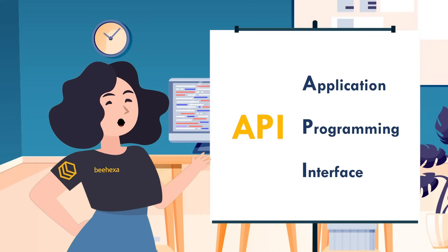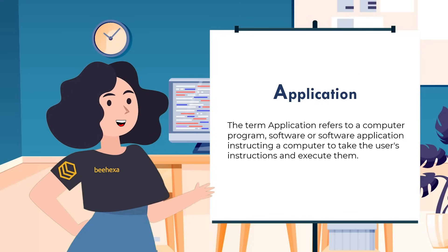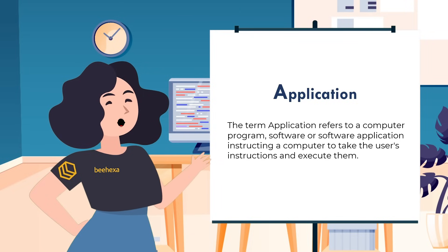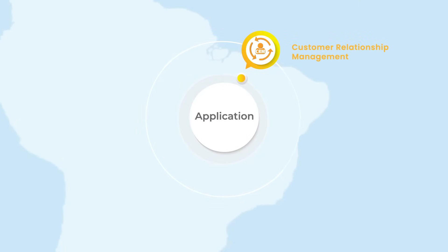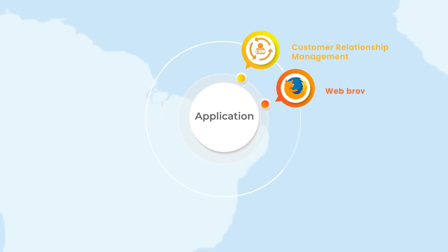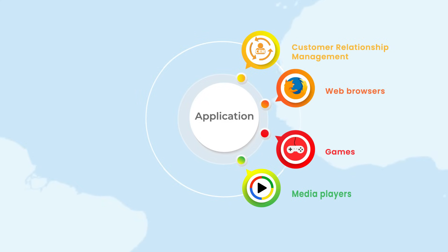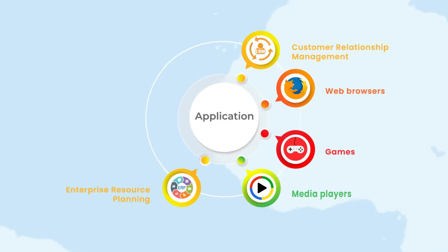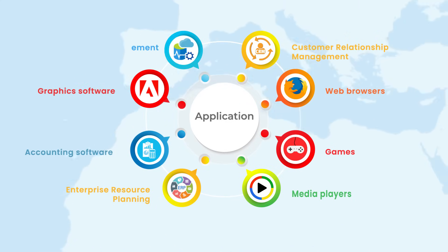Now, let's clarify what is an application. The term application refers to a computer program, software, or software application instructing a computer to take the user's instructions and execute them. Among many others, application programs include customer relationship management, web browsers, games, media players, enterprise resource planning, accounting software, graphics software, and database management.